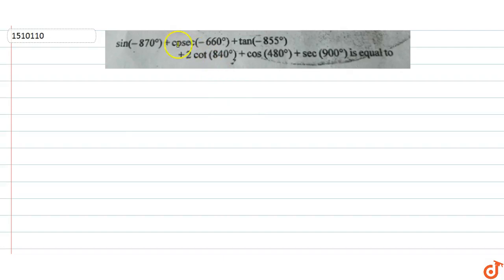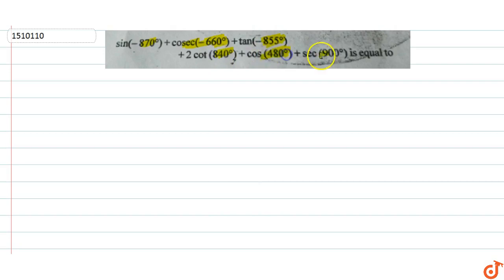In this question we have to find the value of sin(-870°) plus cosec(-660°) plus tan(-855°) plus 2cot(840°) plus cos(480°) plus sec(900°), which equals 2.